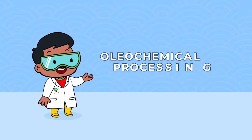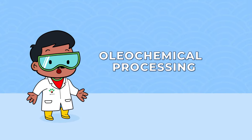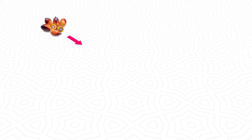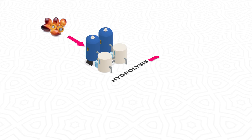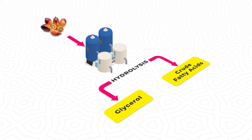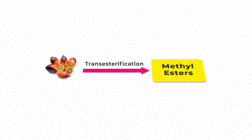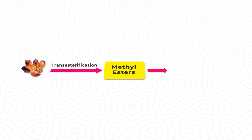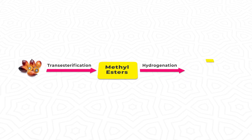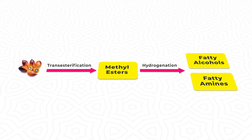Let's look at the processing of oleochemical products. Crude fatty acids and glycerol are produced through a high-temperature and high-pressure fat-splitting method, known as hydrolysis. Methyl esters are produced through transesterification, followed by high-temperature and high-pressure hydrogenation to produce fatty alcohols and fatty amines.